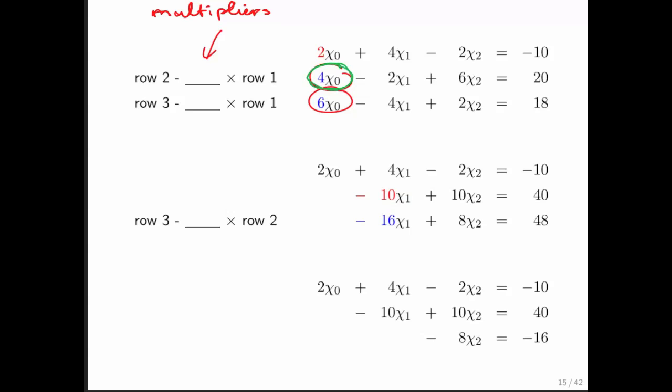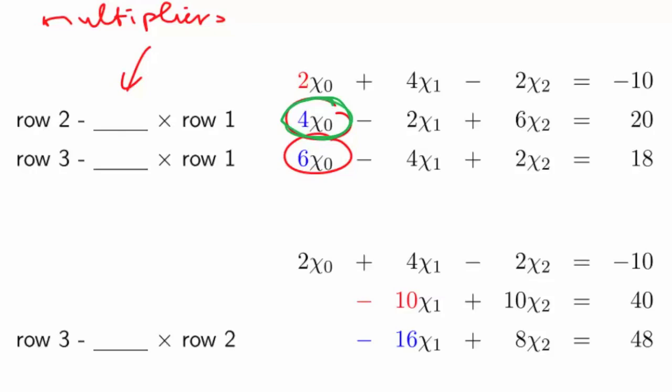In order to eliminate this term, you look at this coefficient, and you divide it by that coefficient, in order to come up with the multiplier. So that multiplier is 2. Similarly, in order to eliminate this second term here, you take this coefficient right here, divided by the 1 that came from the diagonal, and you get 6 divided by 2, which is 3.